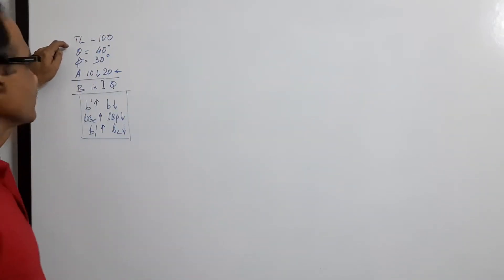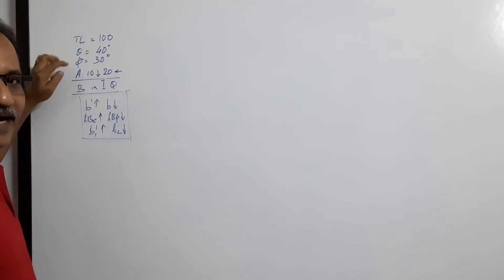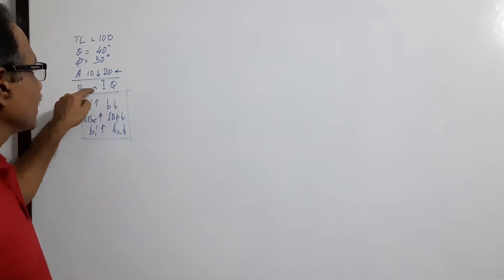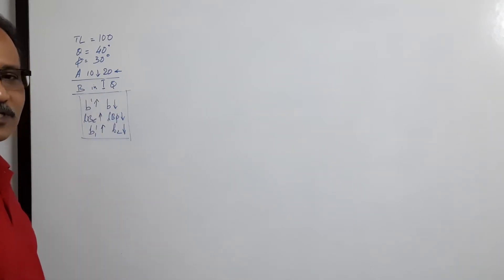True length 100, theta 40 degrees, phi 30 degrees. Point A is 10 mm below HP and 20 mm behind VP. Below HP and behind VP is third quadrant, and end B is in the first quadrant.